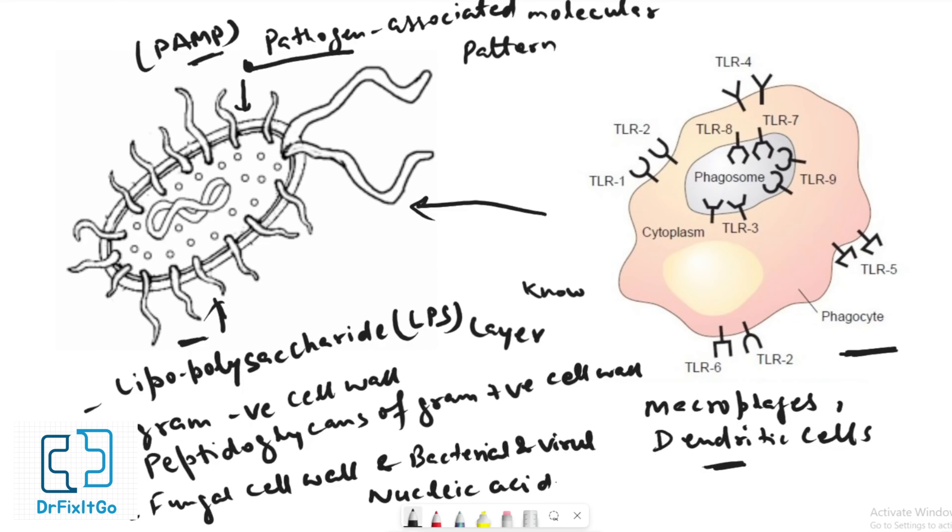PAMPs are recognized by protein receptors called toll-like receptors that are present on macrophages, dendritic cells, and endothelial cells.